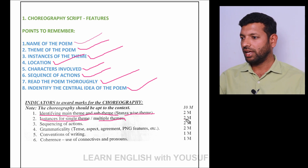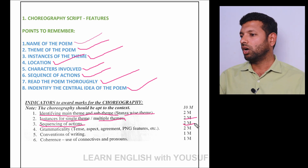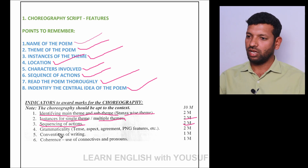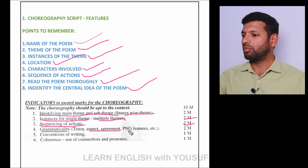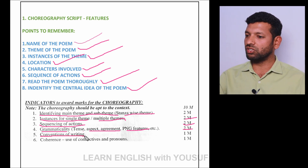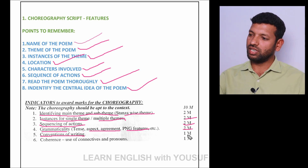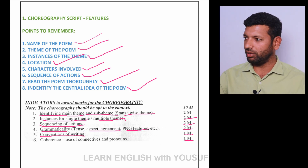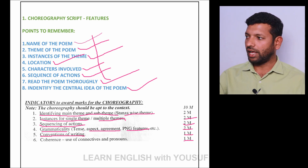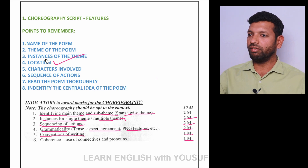For the second point — instances — two marks. The third one is sequence of action; for this also two marks are given. Fourth, grammatical accuracy must be suitable: tense must be followed, aspect and agreement, PNG features must be followed — again two marks. Fifth, conventions of writing — these are nothing but punctuations — one mark. And for coherence and connective pronouns, one mark. So total: ten marks have been covered.